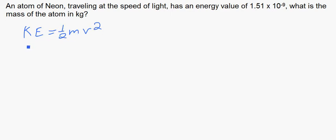So let's plug in the energy value they gave us. And that's equal to one-half of mass, which is what we're trying to find, times the speed of light, which rounds up to 3 times 10 to the 8th. That's meters per second, and this is squared.